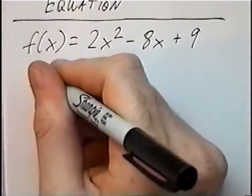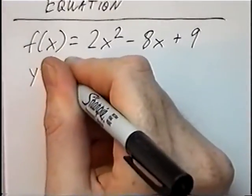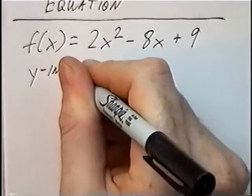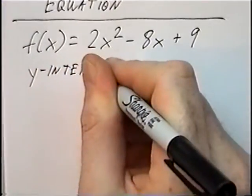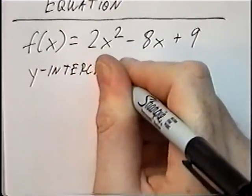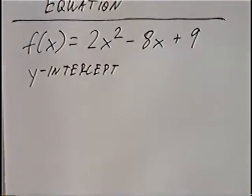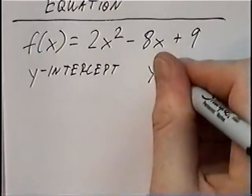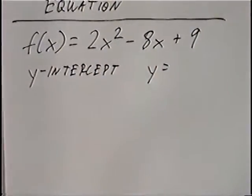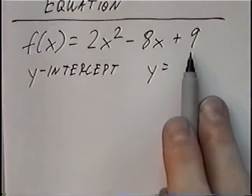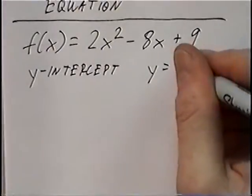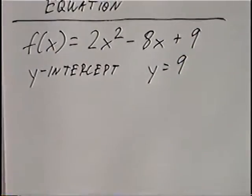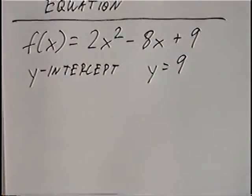The y-intercept for this quadratic equation is y equals the value of c, which is the last number. So y equals 9.